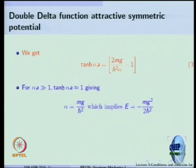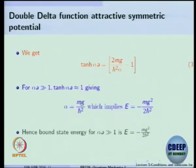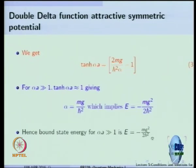At least for alpha times a much larger than 1 — where a is the point where you have the delta function potential, the Dirac delta function — you do have an energy solution and you can get that energy value analytically. We say there is a bound state energy for alpha a much greater than 1, and the bound state energy is minus mg squared by 2.